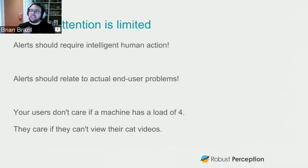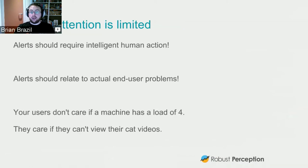Alerts should require intelligent human action from engineers — not automatons — and should relate to end user problems. Users do not care in the slightest if your machine has a load average of four. In modern systems, load average isn't even a particularly useful metric. However, they do care if they can't view their cat videos. So think about cat videos, not load averages.